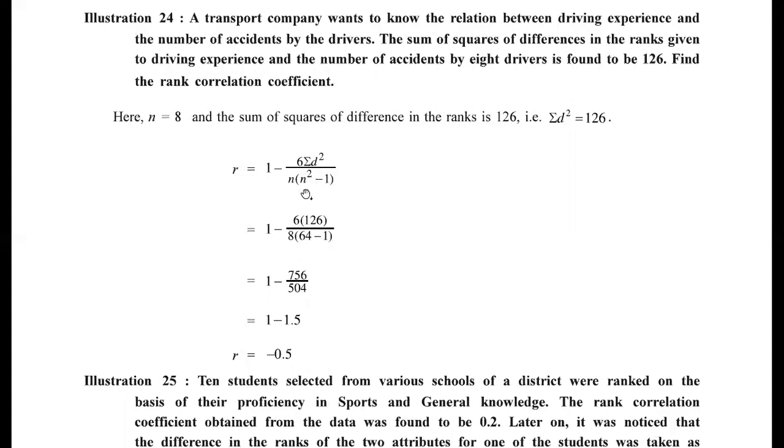Now R is equal to 1 minus 6 into Σd² upon n into (n²−1). So: 1 minus 6 into 126 upon 8 into (64−1). If you perform the calculations you conclude at R = −0.5.